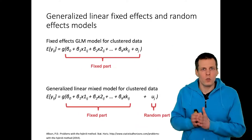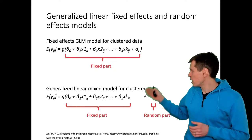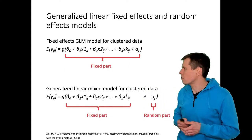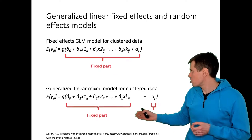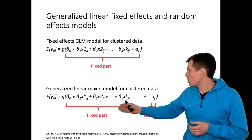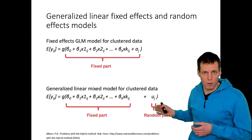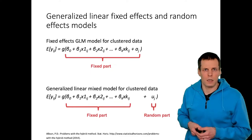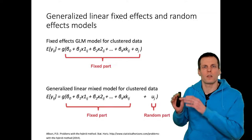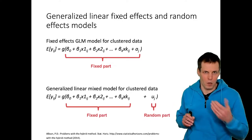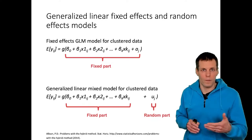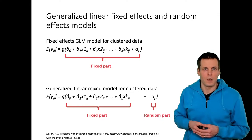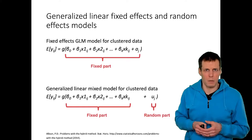When we move to the GLM world, we have a fixed effect GLM model for cluster data. What we add is a link function g around the fixed part, and the same applies to the GLM model for cluster data, which also includes the error term or random effect. In the linear world, we often use a GLS transformation and then apply OLS. Fixed effects and random effects use slightly different transformations, but the OLS step is the same.